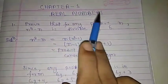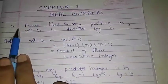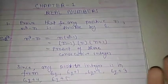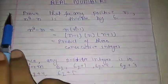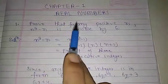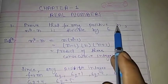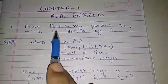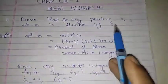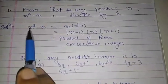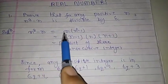Chapter 1 Real Numbers, CBSE Class 10th, most important questions frequently asked in board examinations. First question is: Prove that for any positive integer n, n³ - n is divisible by 6.